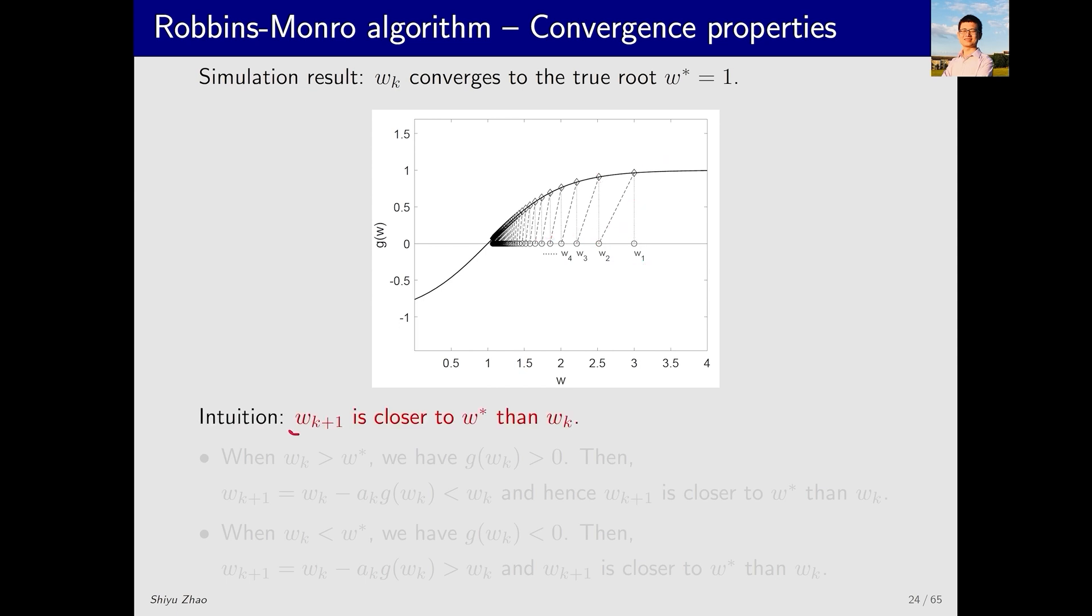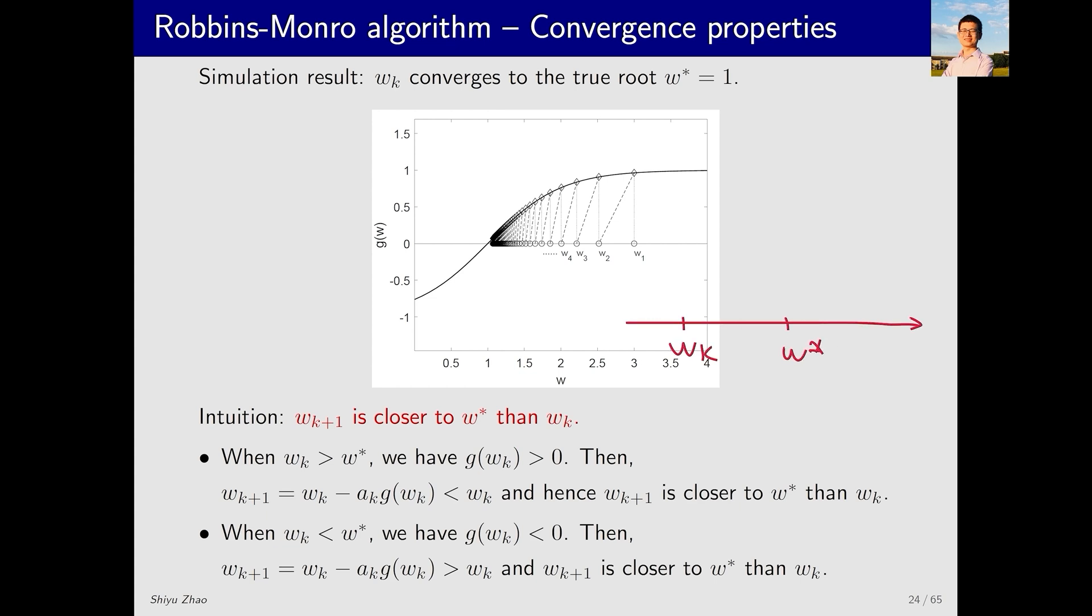Through this example, it is clear that wk+1 is always closer to w* than wk. Why is that? Consider if this is w and this is w*. If wk is here and wk is greater than w*, then g(wk) is greater than 0. Subtracting a number from it means that wk+1 must be smaller than wk, making it closer to w*. If wk is smaller than w*, then g(wk) is less than 0. Subtracting a negative number is like adding a number, making wk+1 greater than wk, again making wk+1 closer to w*.